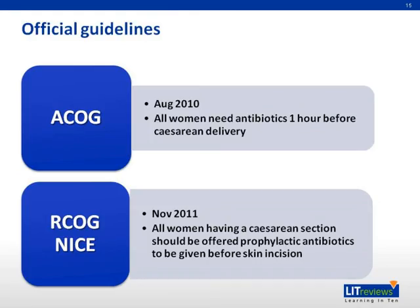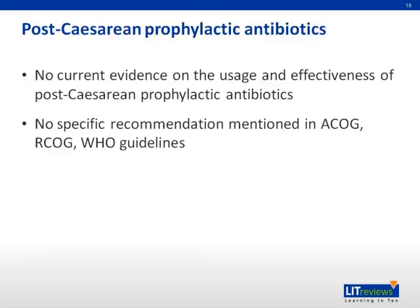As part of the review of this paper, we also looked up guidelines on the use of prophylactic antibiotics in cesarean section. The American guidelines state that all women going for a cesarean section need antibiotics one hour before the procedure. The British guidelines in 2011 state that antibiotics are to be given to all women going for cesarean section just before the skin incision. Our literature review shows there is no current evidence on the usage and effectiveness of post-cesarean prophylactic antibiotics, and post-cesarean prophylactic antibiotics are not mentioned in any of the guidelines reviewed.